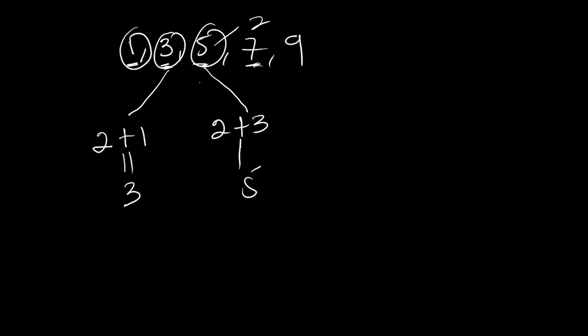So this is an example of a sequence — an ordered list of numbers or objects in which each term is related to the previous one by a certain rule or pattern. Each individual number in this sequence — that's 1, 3, 5, 7, 9 — we call them terms, so they are terms of the sequence.